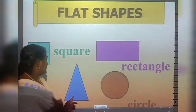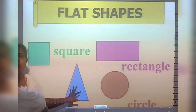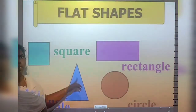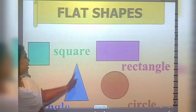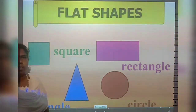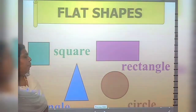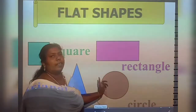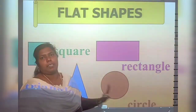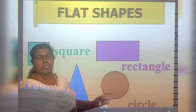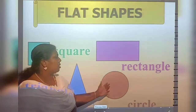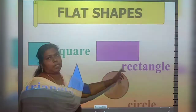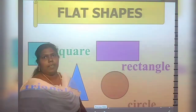Triangle has three sides and three corners. Circle has only curved sides — no sides and no corners, only curved sides.